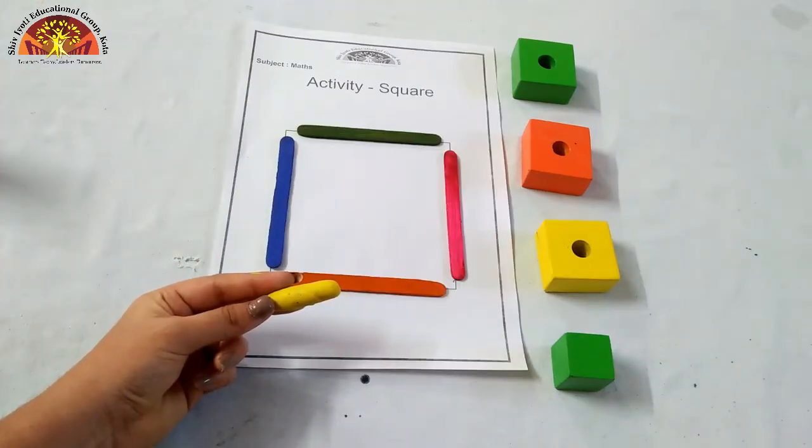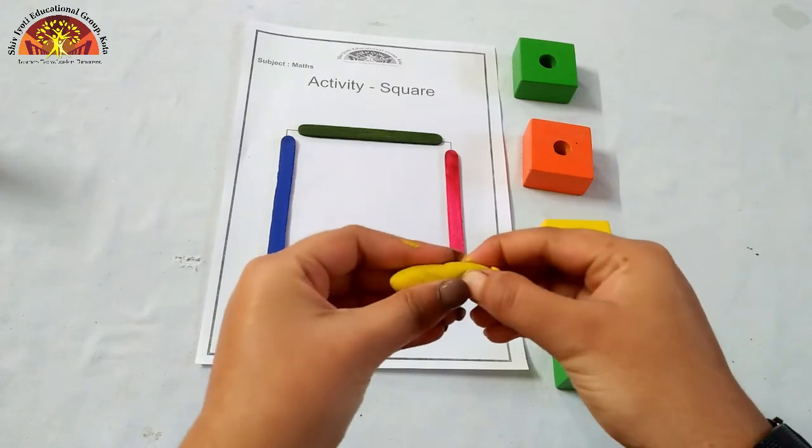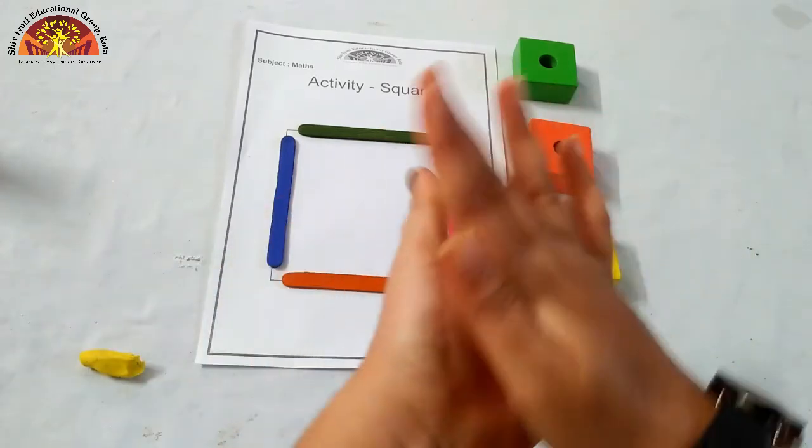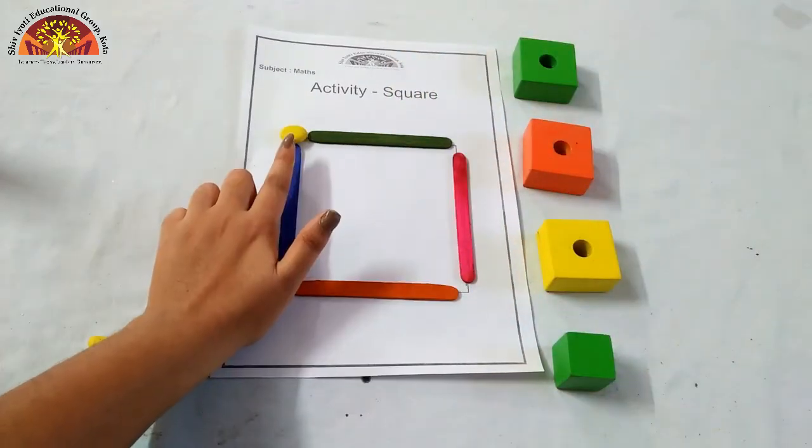Kids, now we will cover all the ice cream sticks with the help of clay. Take small part of the clay. Kids, roll it like this. And paste it over here.